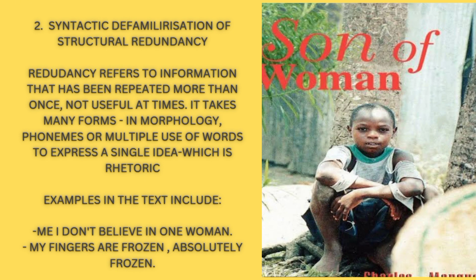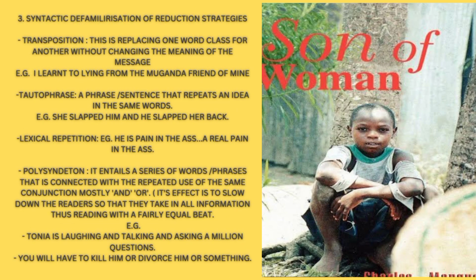Number three: syntactic defamiliarization of reduction strategies. There are a couple of them. Number one: transposition — this is replacing one word class for another without changing the meaning of the message. For example: 'I learned to lie from the Morganda, a friend of mine.' Second one: tautology — a sentence that repeats an idea in the same words. For example: 'She slapped him and he slapped her back.'